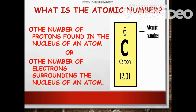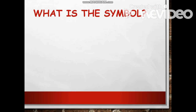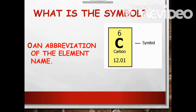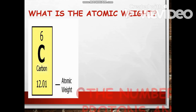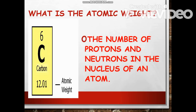So what is the symbol? The symbol is the abbreviation of the name of an element. For example, C is for Carbon, H is for Hydrogen, He is for Helium, Sn is for Tin, and so on. What is the atomic weight? Atomic weight is also called atomic mass — it is the number of protons and neutrons in the nucleus of an atom, derived by adding the number of protons with the number of neutrons.